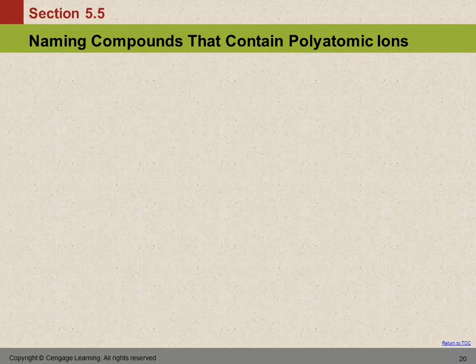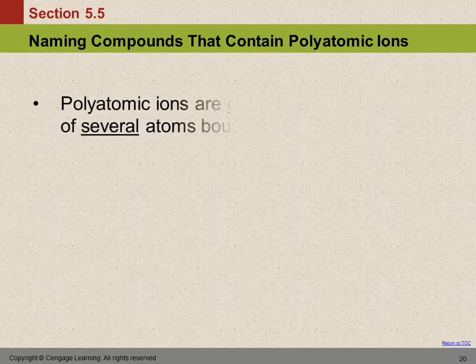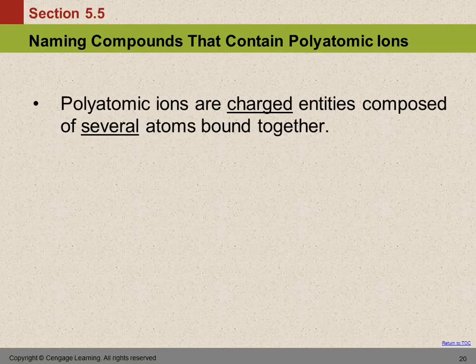We're working on chapter 5, section 5.5. We've talked about naming some binary ionic compounds, and we're going to talk about some polyatomic ions. Polyatomic ions are ions that have more than one atom in them. Poly means many, atomic refers to atoms.